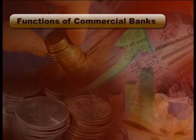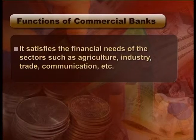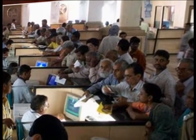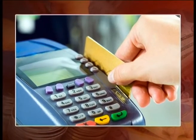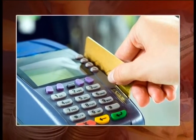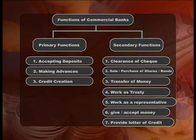Functions of commercial banks: Commercial banks, being financial institutions, perform diverse types of functions. They satisfy the financial needs of sectors such as agriculture, industry, trade, communication, etc., playing a very significant role in the process of economic and social needs. The functions performed by banks are changing according to change in time, and recently they are becoming customer-centric and widening their functions. Generally, the functions of commercial banks are divided into two categories: primary functions and secondary functions. The chart simplifies the functions of banks.